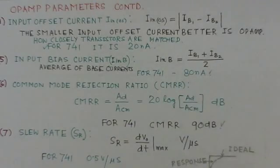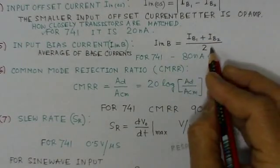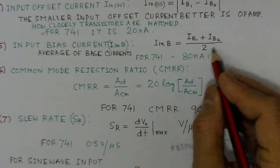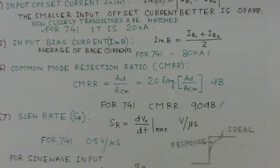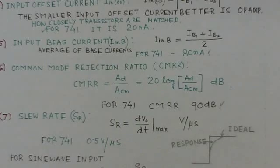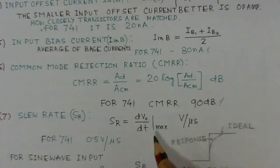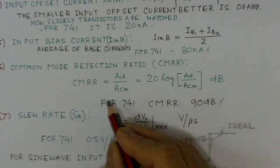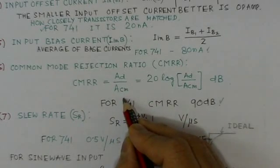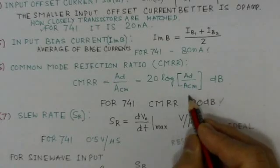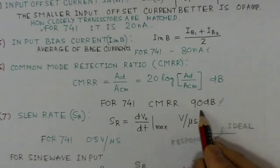Input bias current is essentially the average base current flowing through the operational amplifier: (I_B1 + I_B2) / 2. For the 741, the value is about 80 nanoamperes. Common Mode Rejection Ratio, CMRR, is another very important parameter — it is the ratio of differential gain to common mode gain: 20 log(A_d / A_cm) in dB. For the 741, the CMRR is about 90 dB.